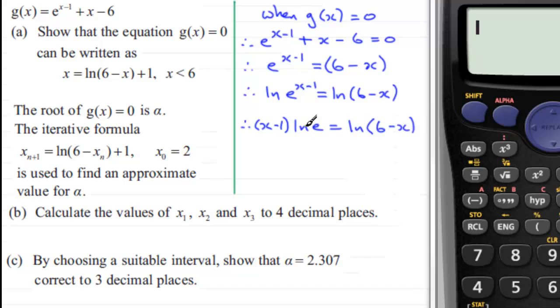Now the natural log of e is 1. In fact, we should know that the log of any number in its own base is always 1. So what we've now got is therefore x minus 1 equals the natural log of 6 minus x.